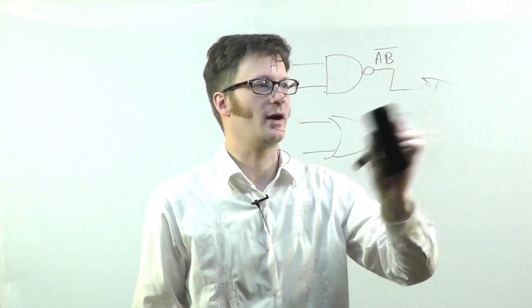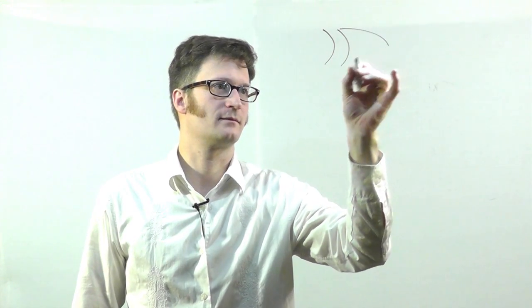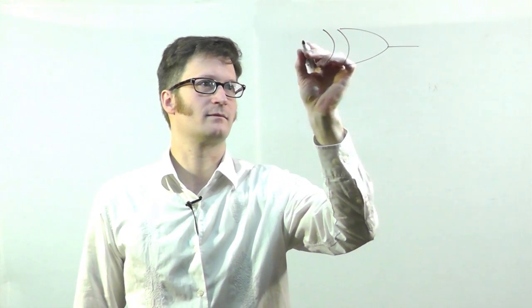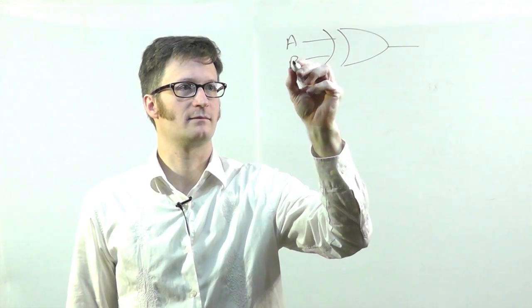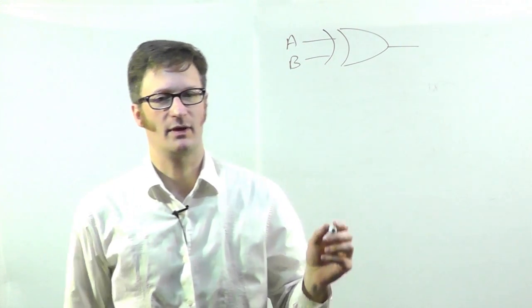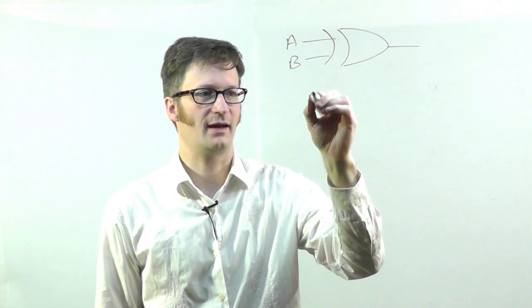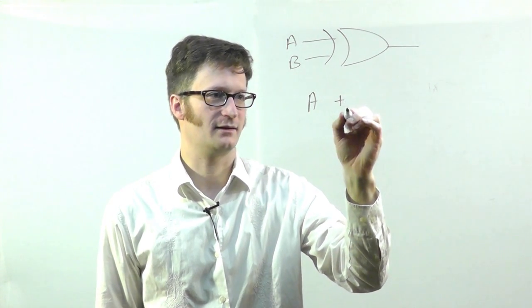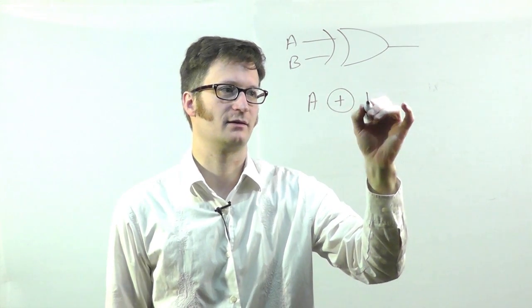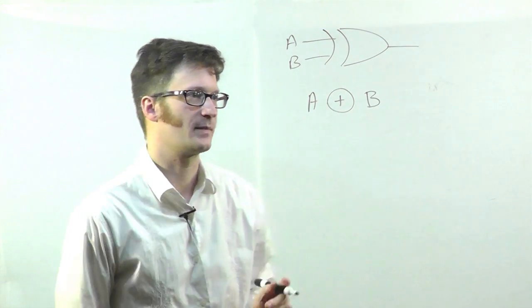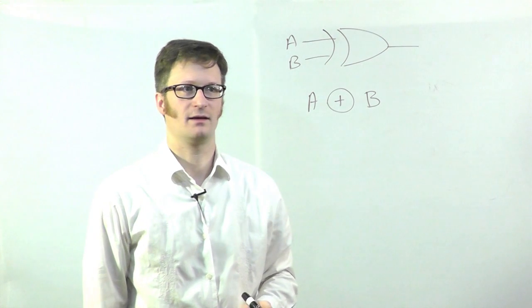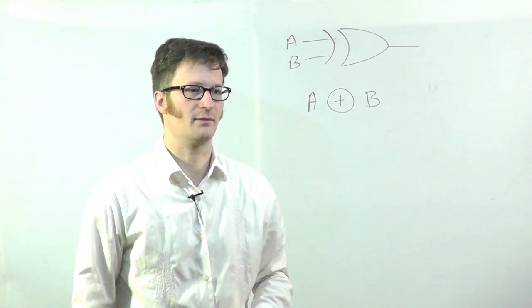I'm going to show one more now. You may remember I talked about the exclusive OR gate, which was drawn like this. The way that you denote this in Boolean algebra is A, it's like an OR, it has a circle around it. Okay. And that about does it.